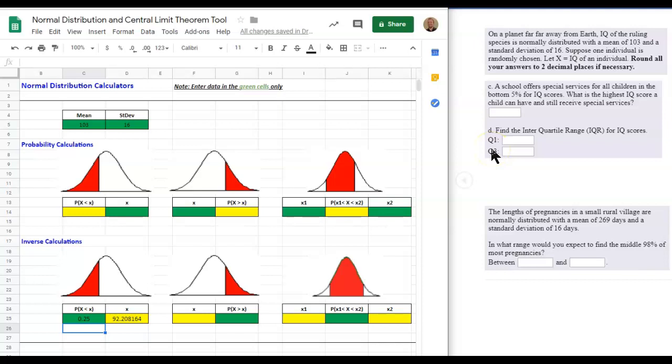Q3 would be the 75th percentile. So we'd put 0.75. And there we go. Round to two decimals. We're good. And then you would next be asked for IQR if you had this problem. But we're not interested in that right now.